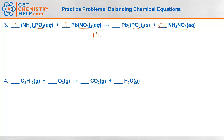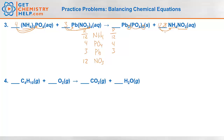Let's double check with a quick table: ammoniums, phosphates, lead, and nitrate. Reactant side: four times three is twelve ammoniums; product side: twelve ammoniums. Phosphate: four on the reactants, four on the products. Lead: three on the reactants, three on the products. Nitrate: three times four is twelve on the reactants; twelve on the products. Good job.